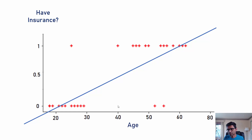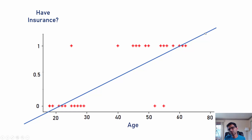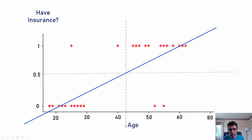After drawing the best-fit line, you can make predictions. For example, to predict if an 85-year-old wants to buy insurance, you find 85 on the x-axis. The value is more than 0.5, so the person will buy insurance. Anything 0.5 or above means the person buys insurance; below that means they don't. Around age 42, a person starts buying insurance according to this boundary.